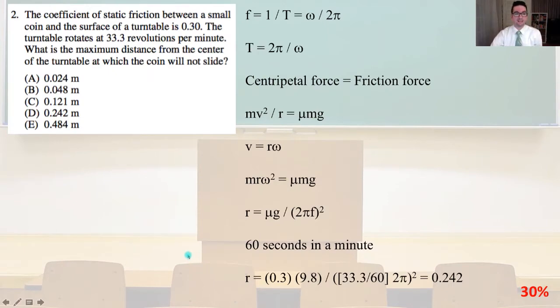Number two. The coefficient of static friction between a small coin and the surface of a turntable is 0.3. The turntable rotates at 33.3 revolutions per minute. What is the maximum distance from the center of the turntable at which the coin will not slide?